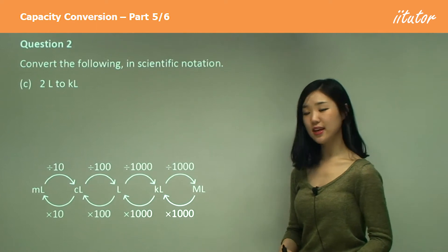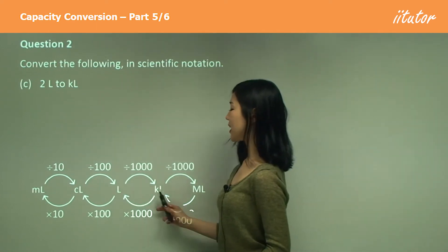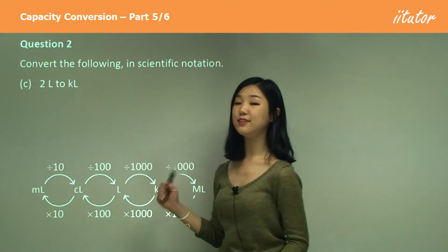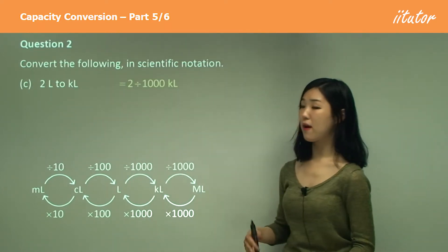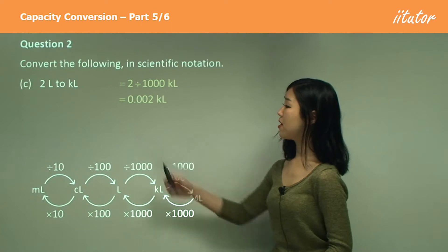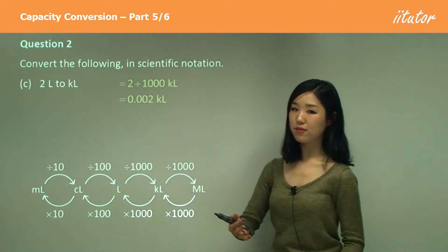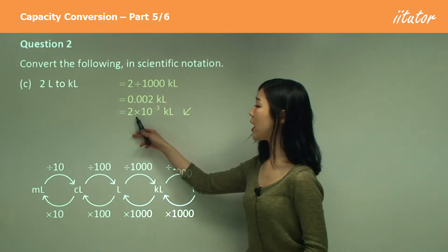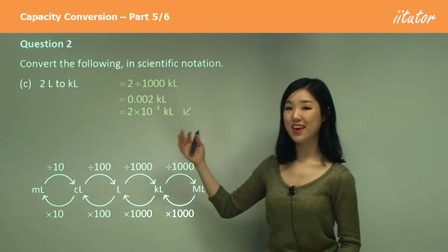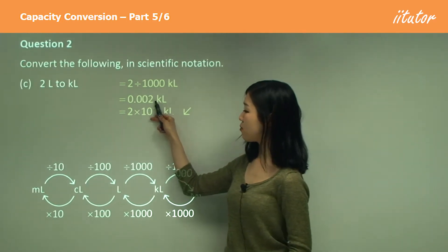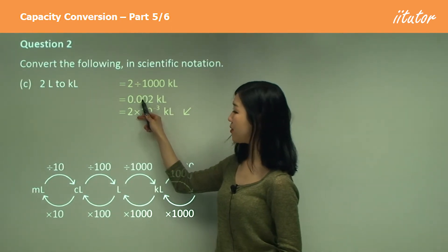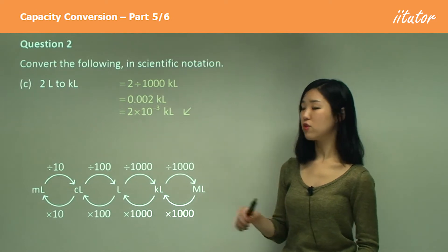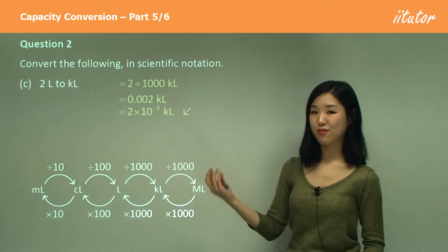Two litres to kilolitres. Litres to kilolitres — we're going from small to large, so this time we divide. We divide two by a thousand, which will become 0.002. Now in scientific notation it will be 2 times 10 to the power of negative 3, because if I put the decimal there, I have to go backwards 3 places to go back to the original spot. So it's 10 to the power of negative 3.